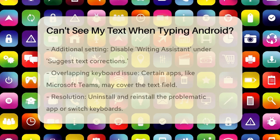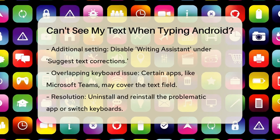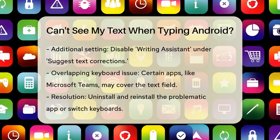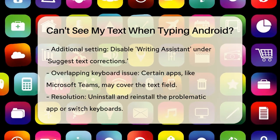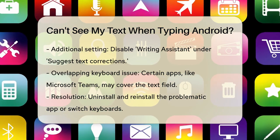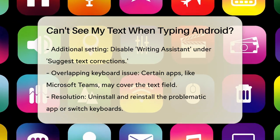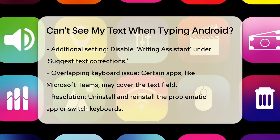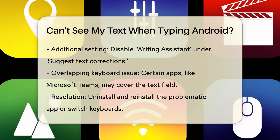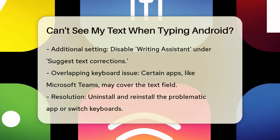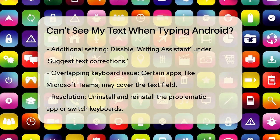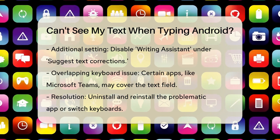Go to your phone settings, then select General Management, followed by Samsung Keyboard, and finally third-party apps. Here you can turn off Grammarly and any other apps that might be interfering. Additionally, you can turn off the writing assistant under Suggest Text Corrections.